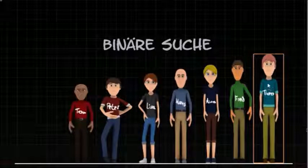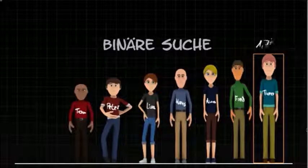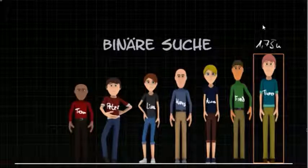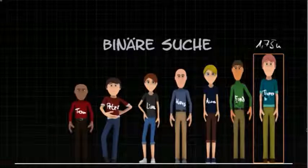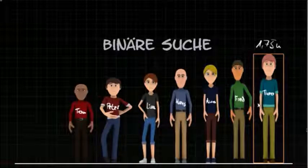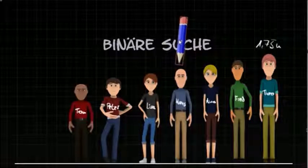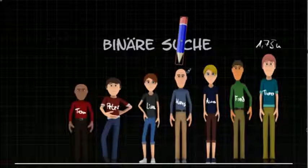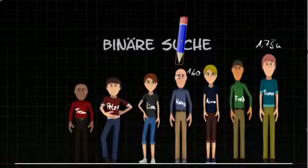So let's assume we want to find Theo, and Theo is 1 meter and 75 centimeters tall. The binary search works like this: if I have a set of elements I will start with looking at the median element. In this case this is Hans. Hans has a size of 1.60, so he's not the person we are looking for.